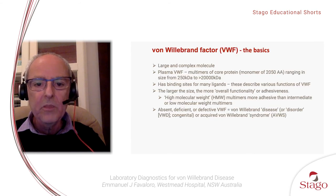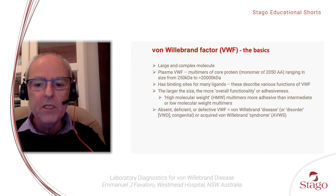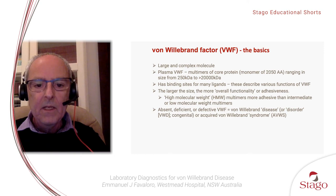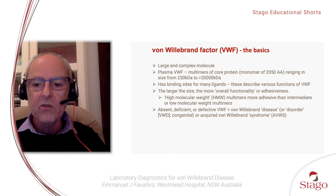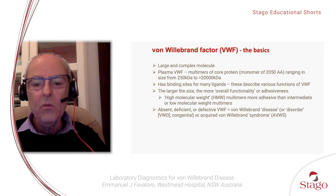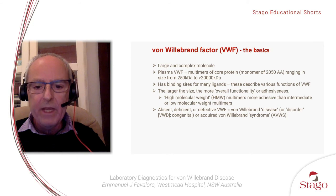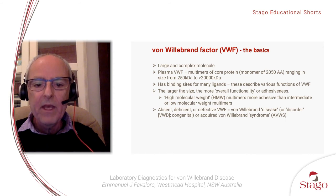Von Willebrand factor is a large and complex molecule. In plasma, it presents as multimers of a core protein. The monomer has about 2,000 amino acids, but the multimers range in size from about 250 kD to greater than 20,000 kD. Each molecule has binding sites for many ligands, describing the various functions of von Willebrand factor. The larger the multimers, the more overall binding sites and adhesiveness the molecule has. Thus, the high molecular weight forms are more adhesive or more functional than intermediate or low molecular weight forms. This is important in understanding Type 2A and 2B von Willebrand disease, where you may have normal levels of VWF but it is deficient in high molecular weight forms.